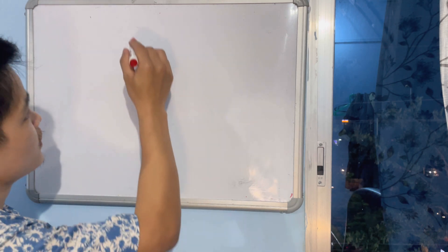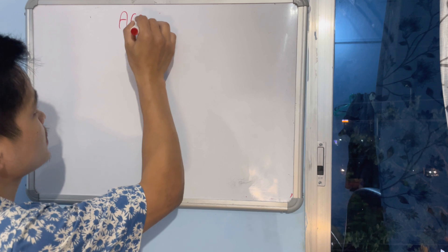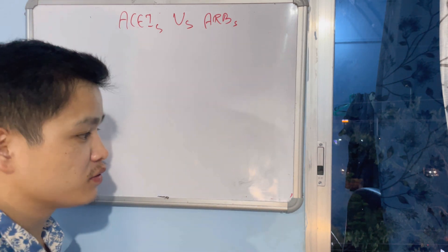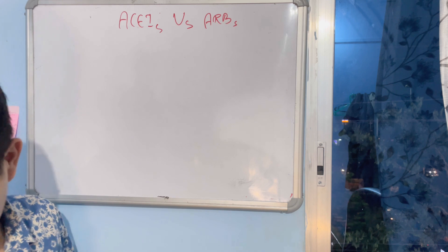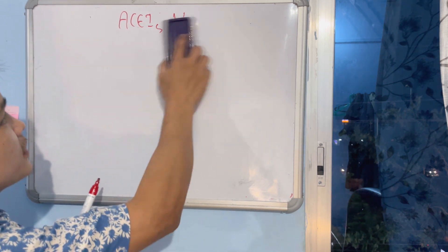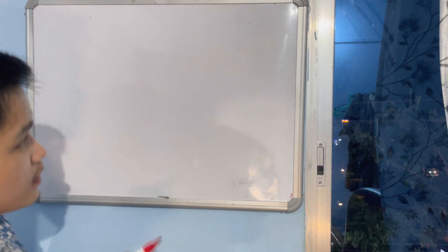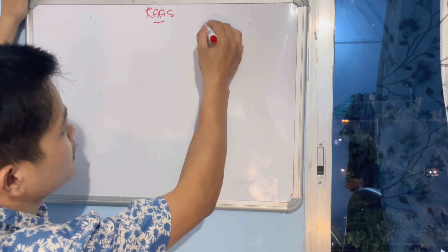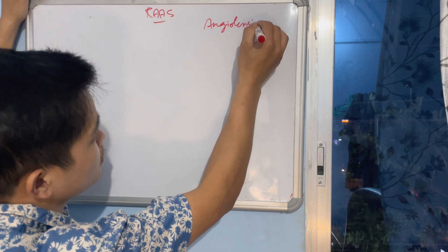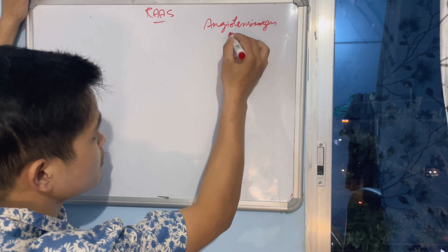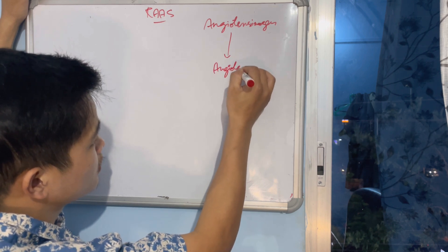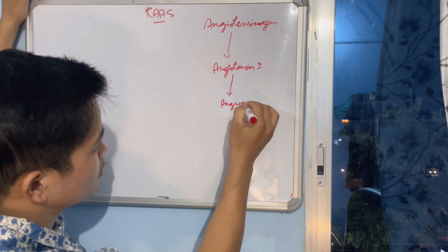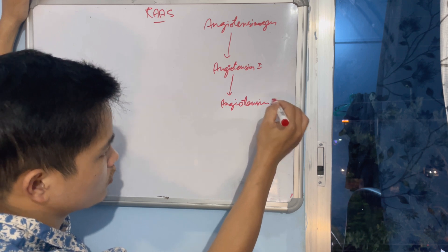So today's discussion is between ACE inhibitors versus ARBs, but before we go into the drug, we have to know a little bit of physiology. As you know, there is something called RAS system - RAS system.